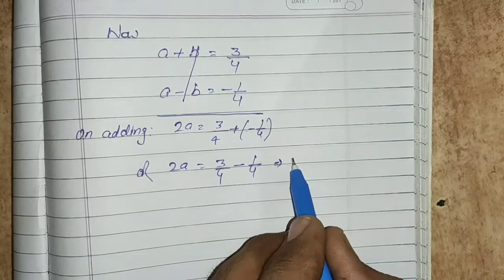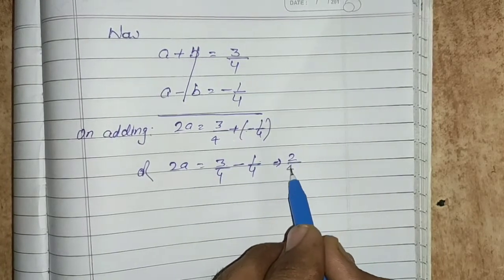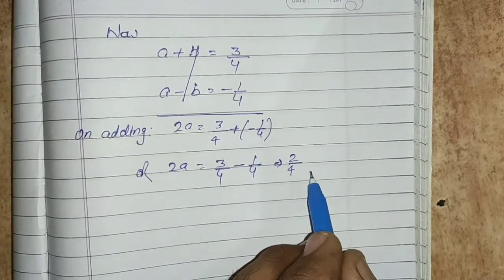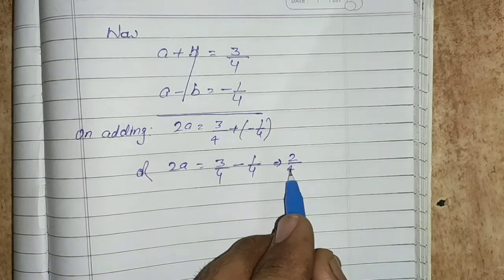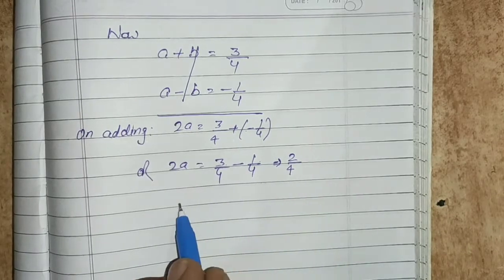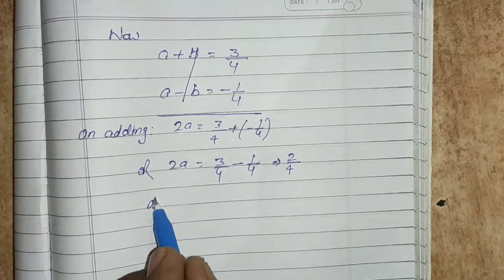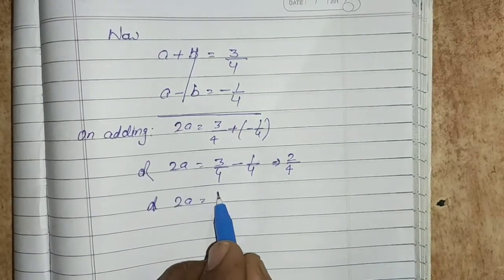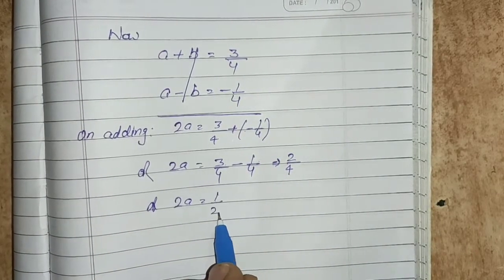3 minus 1 becomes 2, so 2a equals to 2 upon 4, which is 1 by 2. Transposing, a equals to 1 by 2 divided by 2, which gives a equals to 1 by 4.